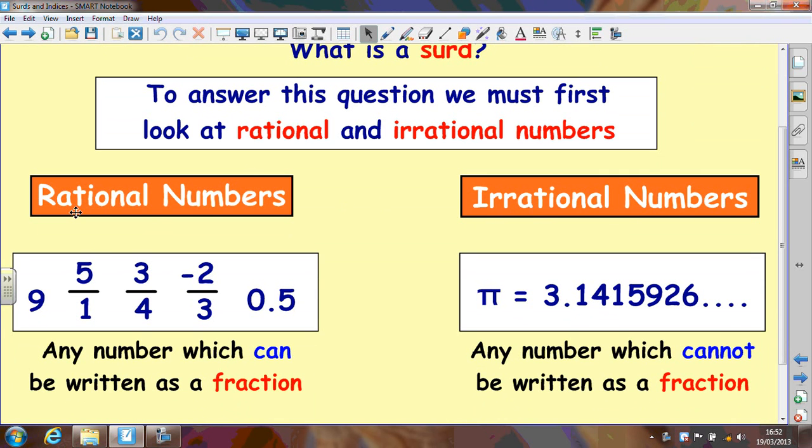A rational number is basically any number that can be written as a fraction. So any whole numbers or fractions like three-quarters or two-thirds or a fifth or four-fifths, they're all rational numbers. Irrational numbers cannot be written as a fraction, only a decimal.